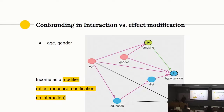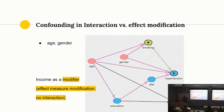This income variable does not have to do with anything related to the exposure and outcome — it can be just a random variable and you can try to check whether the estimates are different. There is no direct causal interaction here because income has nothing to do with smoking directly in the DAG, nor does it have anything to do with the outcome.